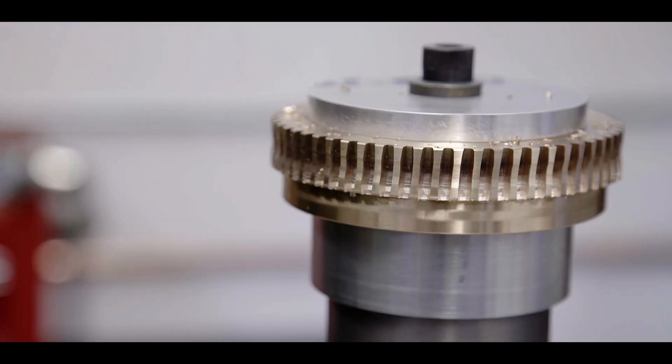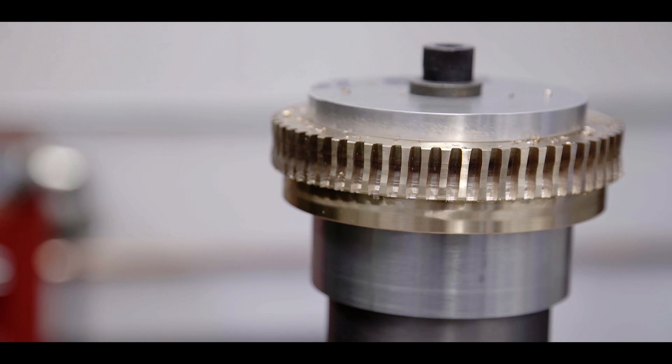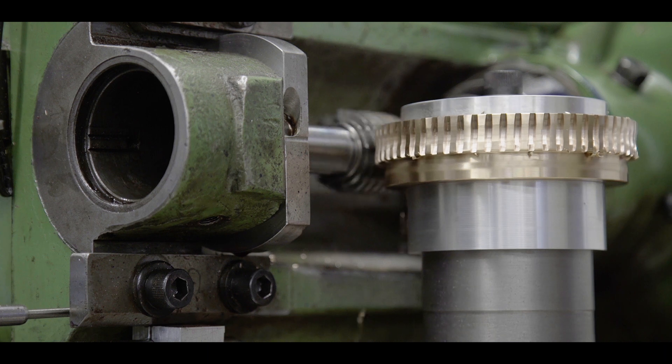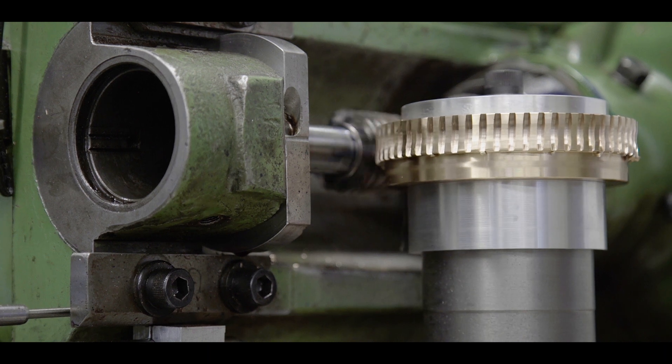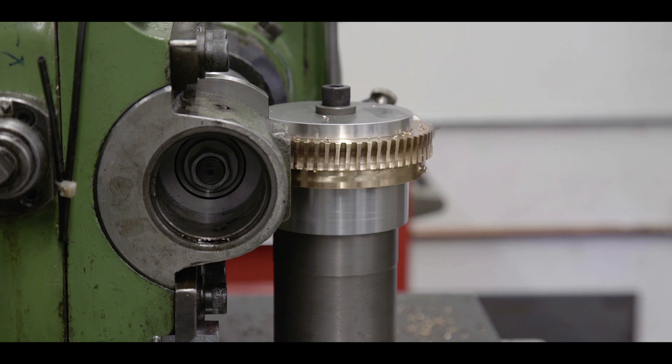Each hob is a couple of thousand bucks. So you want to get as much life out of your hob as you can. This way you rough with one section and when it comes to the finished gear you need a sharp hob. So that's why we moved to the sharp part to get the finished gear that we need.